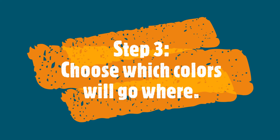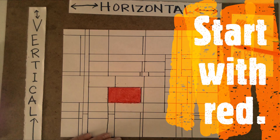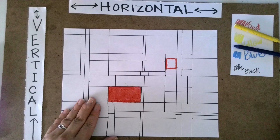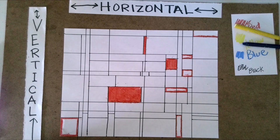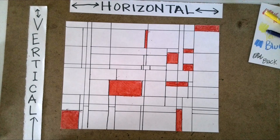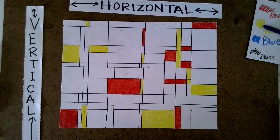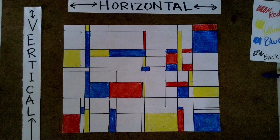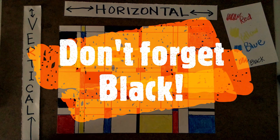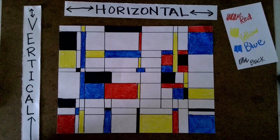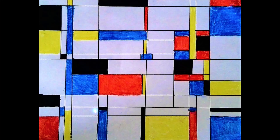In step three, we're going to choose which colors will go where. We'll start with red — pick which square you want to color red and outline the inside of it so you'll know where each red goes. Using that same outlining technique, add yellow and color them in, then add blue. Don't forget to color a few sections in black.